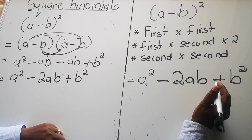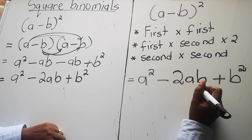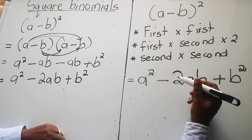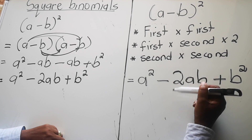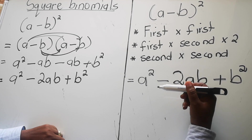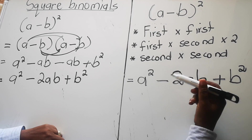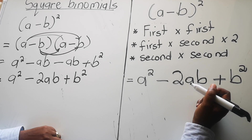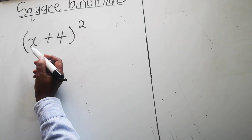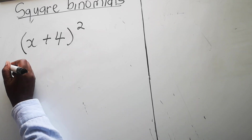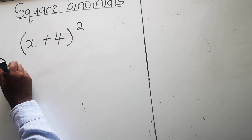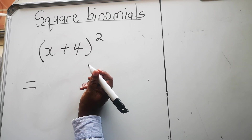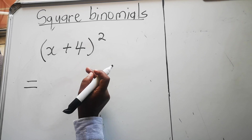Now I'm going to give you an example. Write it and try to get the answer before you look at how I do it. You do it first, then pause the video, then look at the video after. Let's look at an example of a square binomial using the short way — but please watch only after you have tried it yourself.